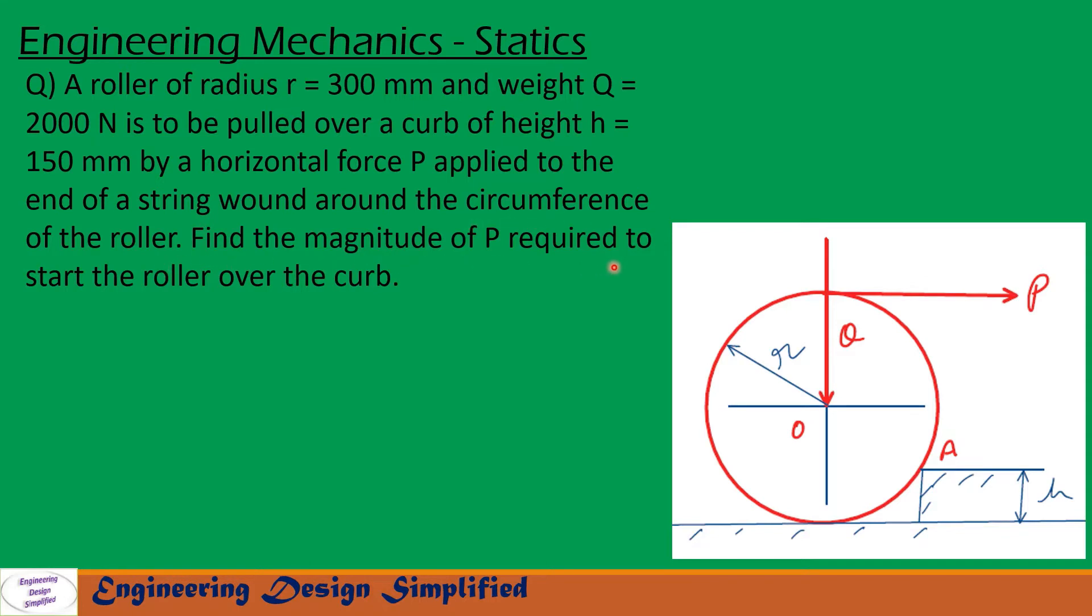Find the magnitude of P required to start the roller over the curb. In this problem, a roller of radius 300 mm and weight 2000 N is to be pulled over a curb of height h = 150 mm by applying a load tangentially as shown in the figure. We need to find the amount of P required to roll this roller over this curb. Let us see in the coming slides how to solve this problem.